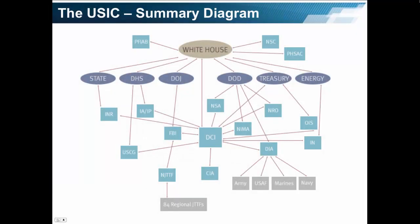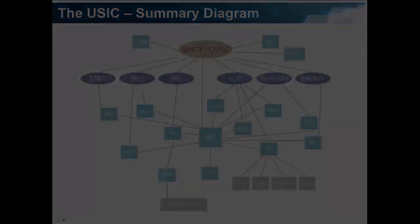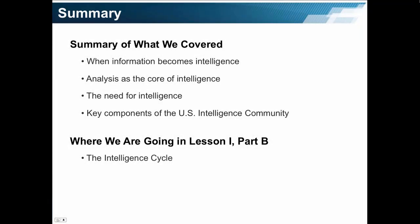Here is a diagram that summarizes all the components of the intelligence community. This was placed here to help you in your studies, particularly as you move along. What did we cover in Part A? We focused especially on the difference between intelligence and information, when information becomes intelligence, analysis at the core of intelligence, the need for intelligence, and the key components of the U.S. intelligence community.